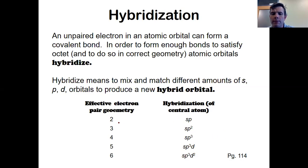And in order to do that, what you are going to do is look at the effective pair geometry and associate that with the specific hybridization. So again, this chart is page 114. But if you have an effective pair geometry of two, you are in an SP hybridization. That means it's one S orbital and one P orbital. Three is SP2, one S orbital and two P orbitals, et cetera.